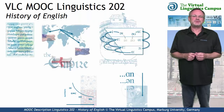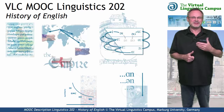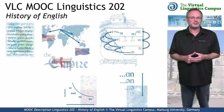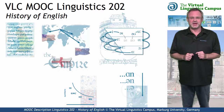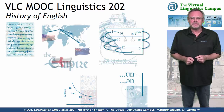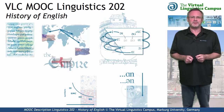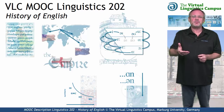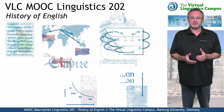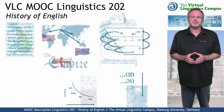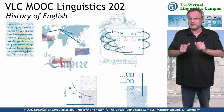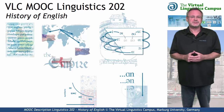Welcome to the Virtual Linguistics Campus PMOOC Linguistics 202, History of English — our permanent free online offer for everyone who is interested in the development of English from Proto-Indo-European and before until today.